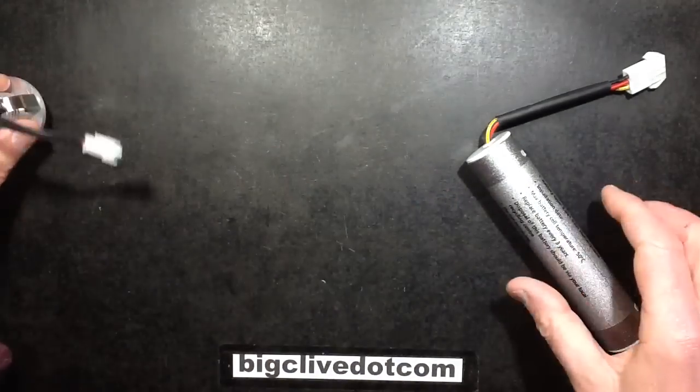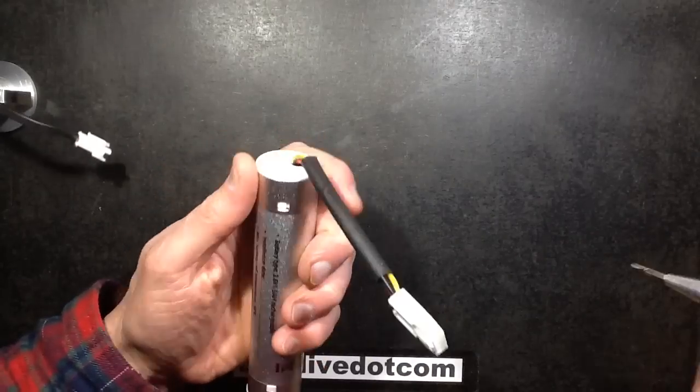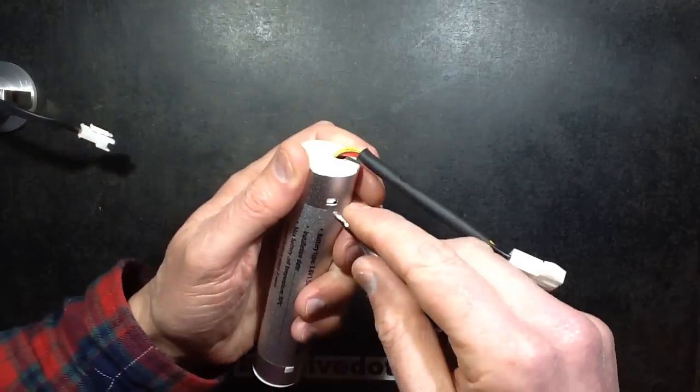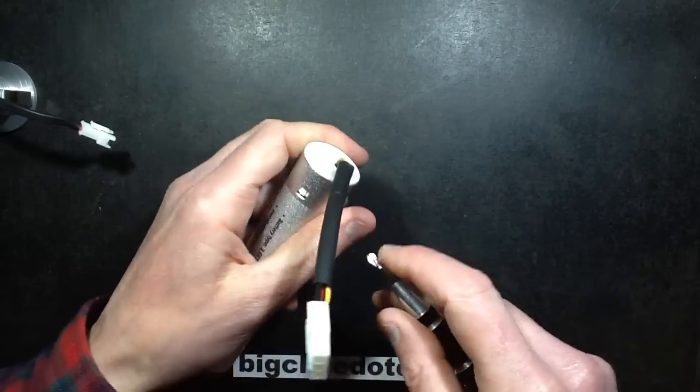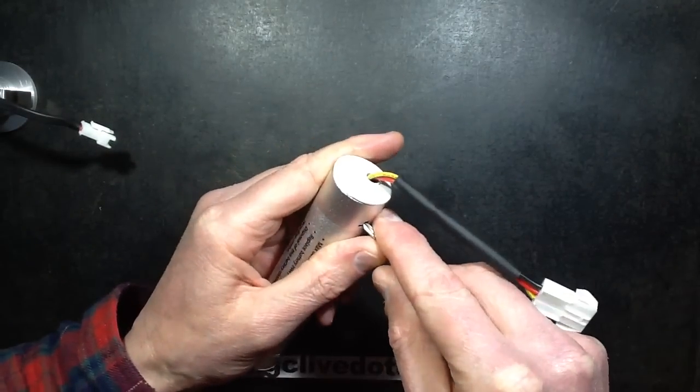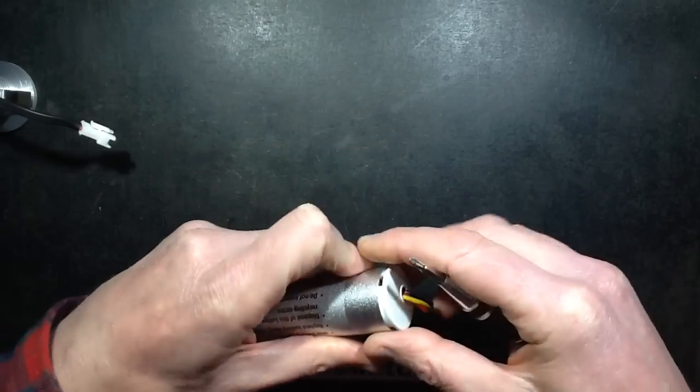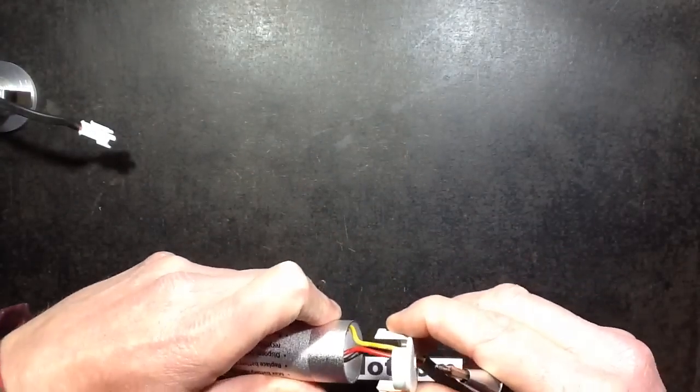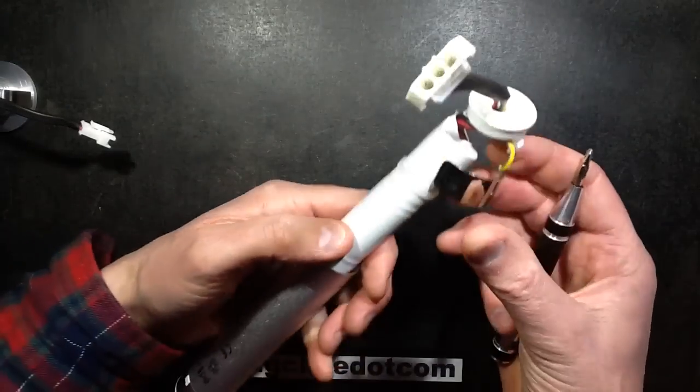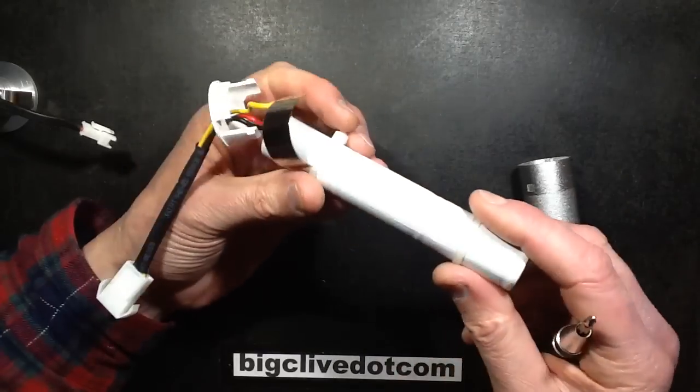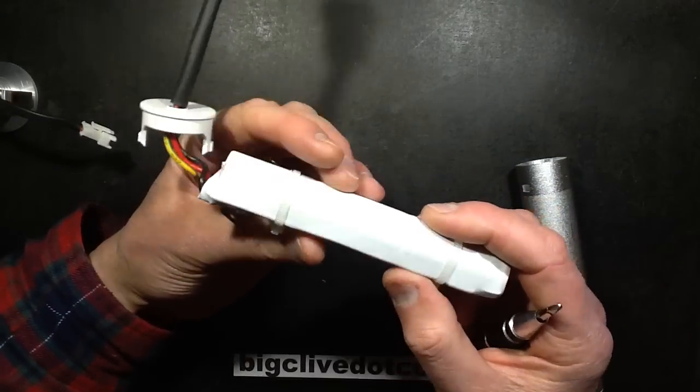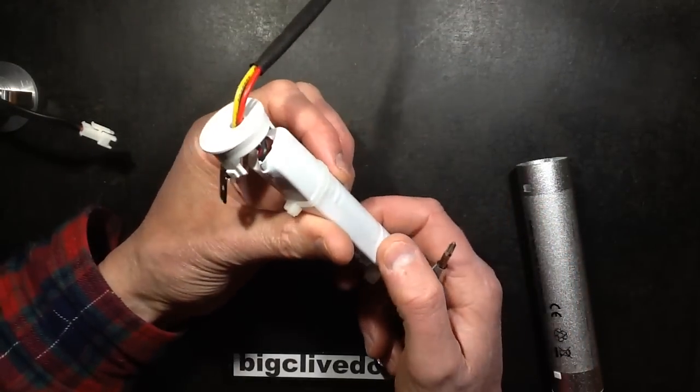The battery pack is held together by clips. When you push these clips in, the end cap can come off. It's got three wires going into it including an earth wire. Inside, the earth's connection is made by this springy metal clip here, and then it's just a stack of fairly standard nickel cells.